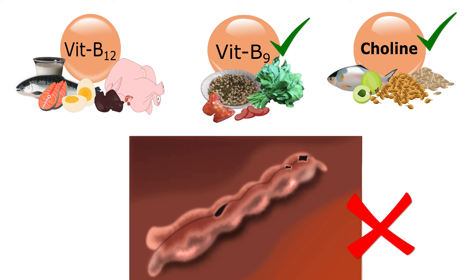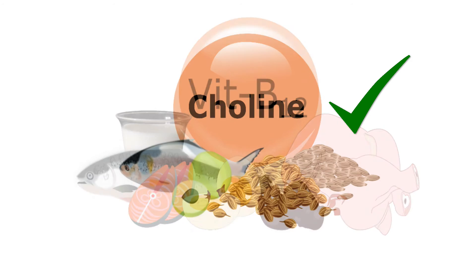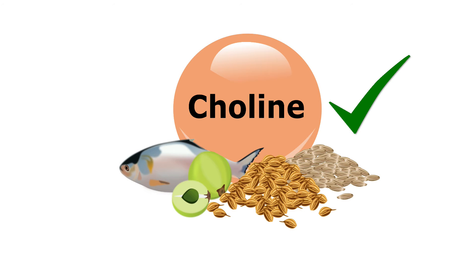Along with folate, other nutrients are also important to prevent neural tube defects, for example, vitamin B12 and choline.